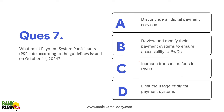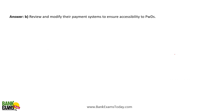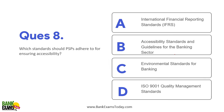What must Payment System Participants (PSPs) do according to guidelines issued on 11th October? They must make their systems friendly and accessible for physically disabled persons. What standards must PSPs adhere to for ensuring accessibility? They must adhere to the accessibility standards guidelines for the banking sector.